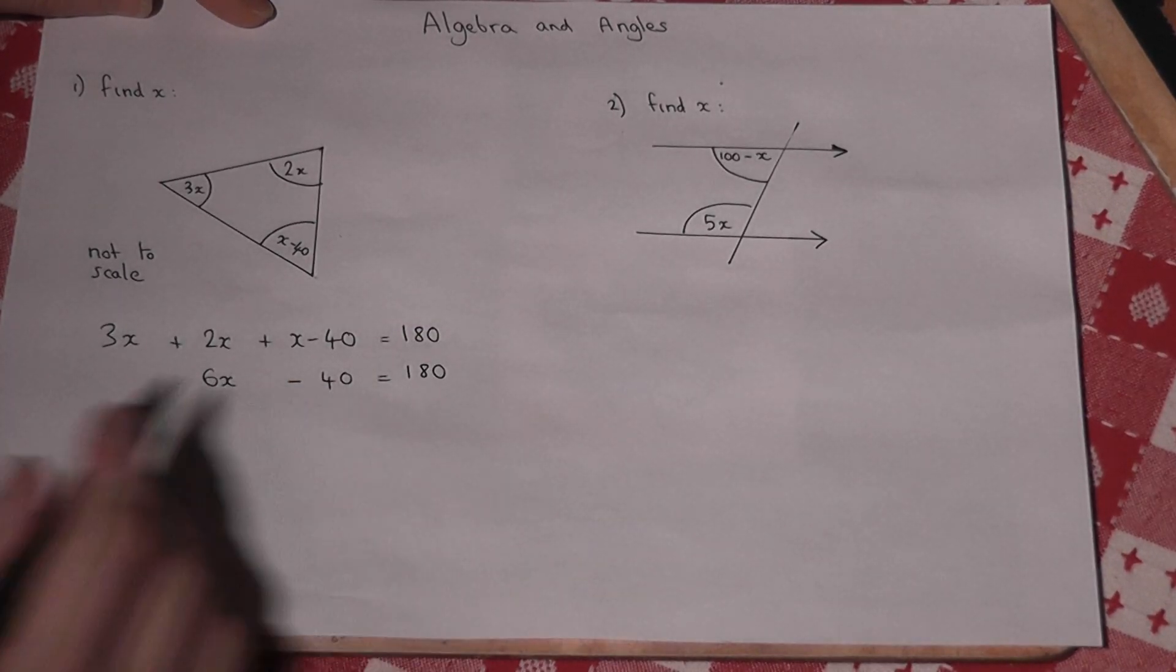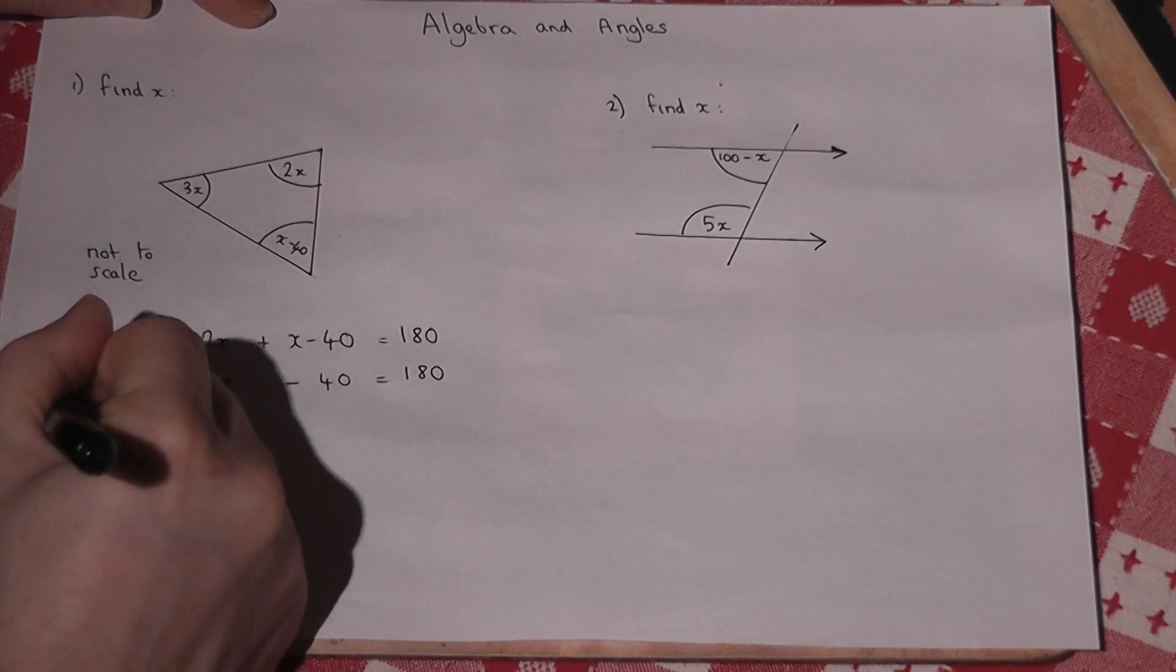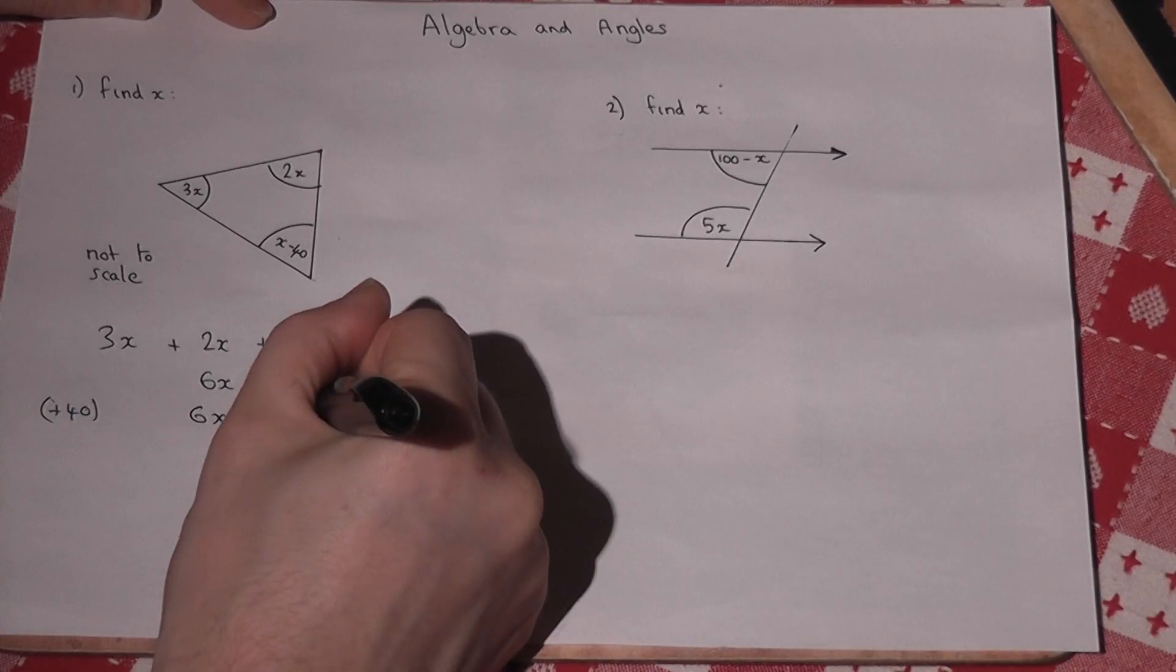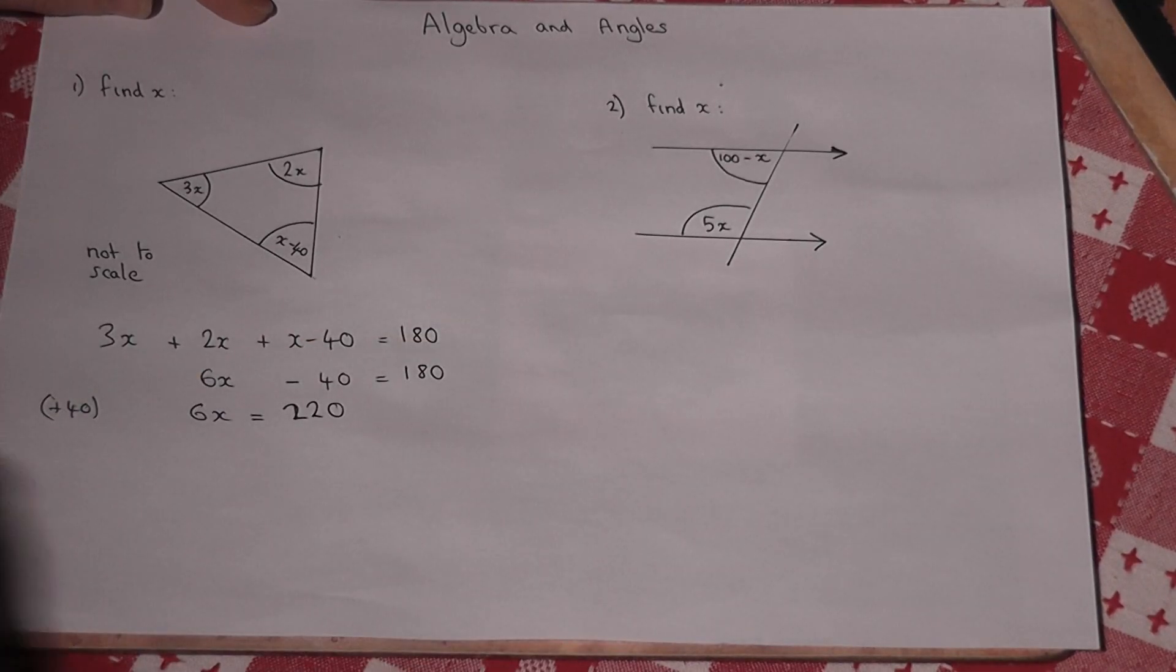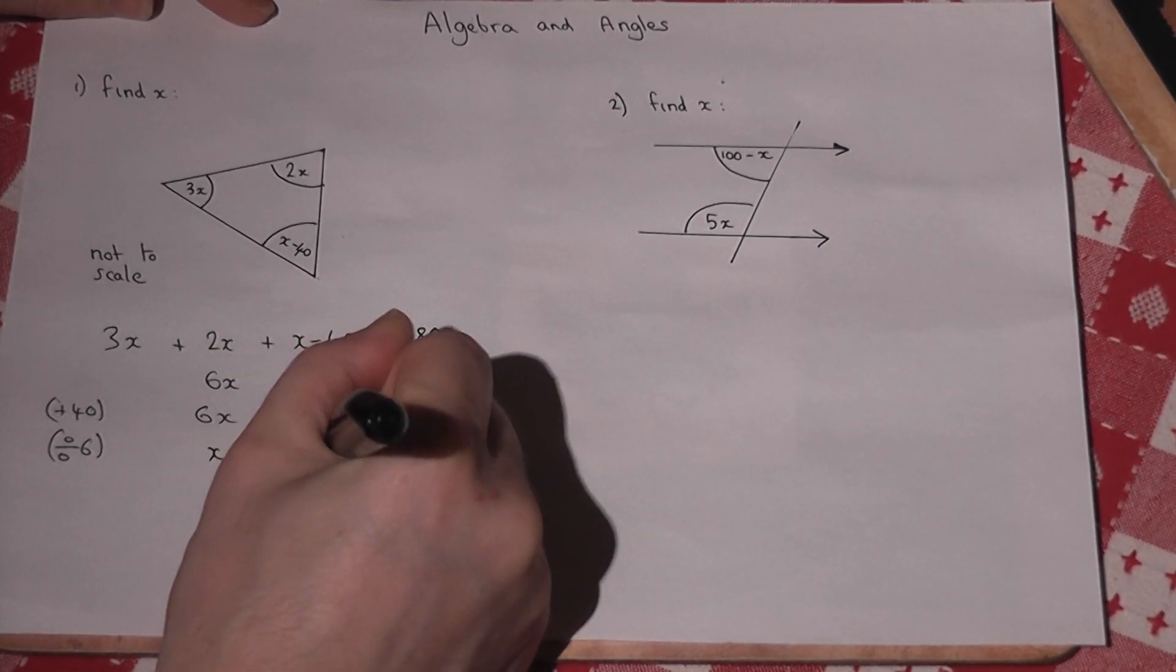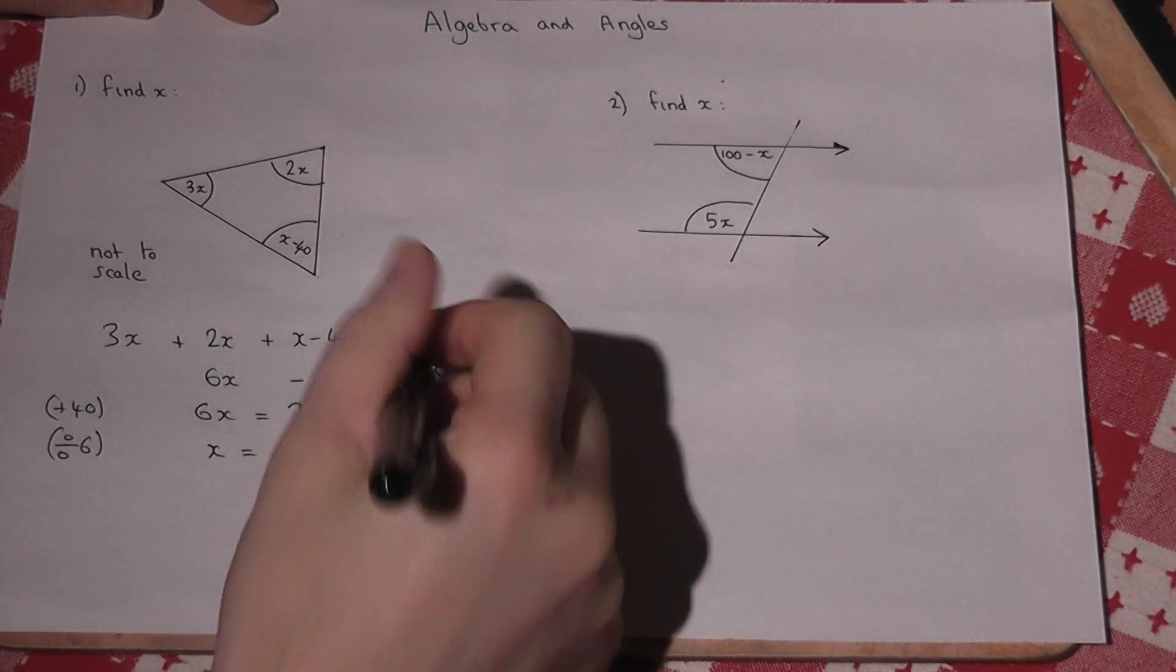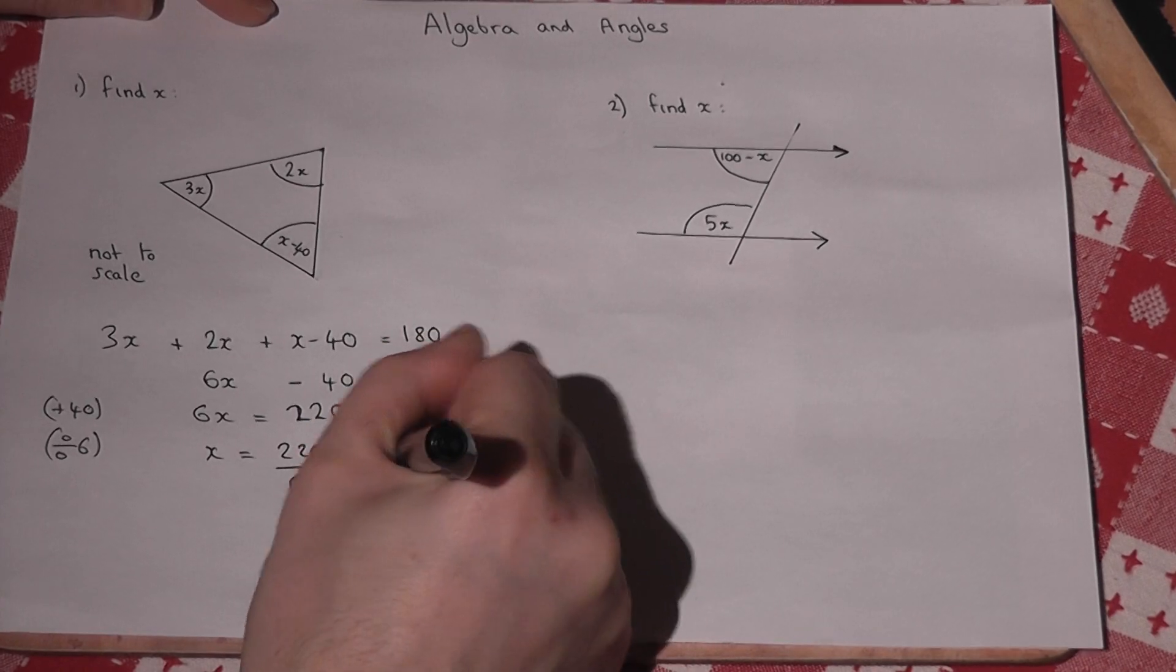And then solve like any normal equation. I have to add 40. So 6x must equal 220. And then divide by 6. So x must equal 220 over 6, which is the same as 110 over 3.